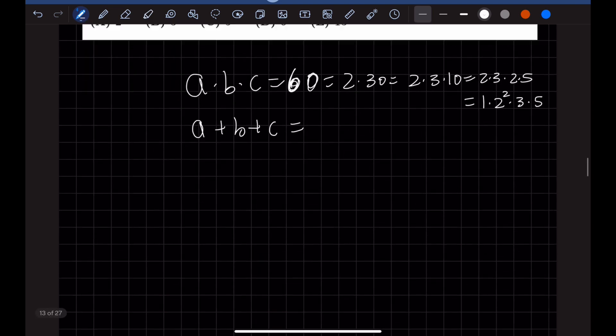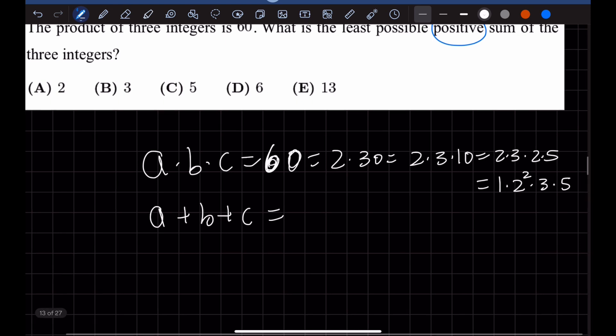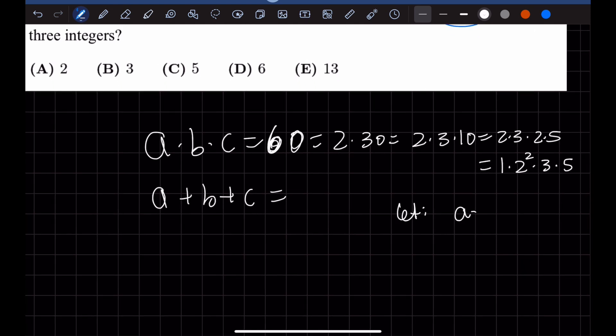So now just play around these numbers and see if we could get a small number. If we let A equal 5, B equal 4, which is 2 to the power of 2, that means C has to be equal to 3.